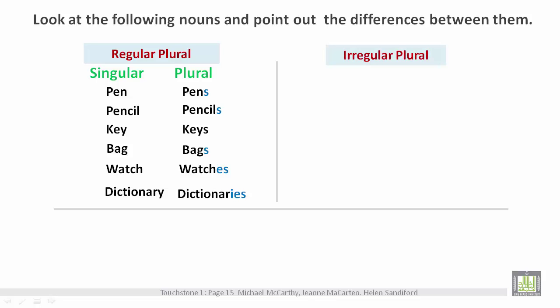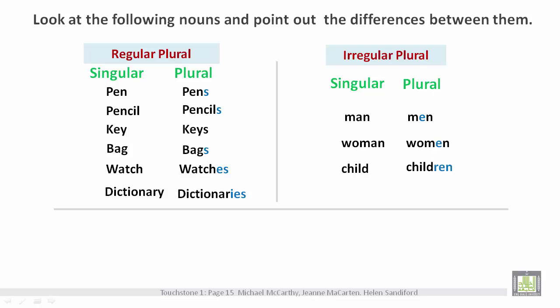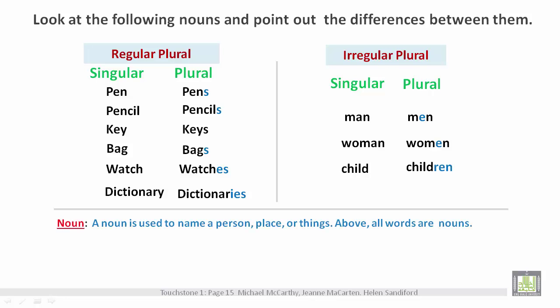The irregular plural — singular and plural forms: man → men, woman → women, child → children. Notice: 'woman' and 'women' sound the same, but in the singular it's spelled with an A, and in the plural it's spelled with an E.